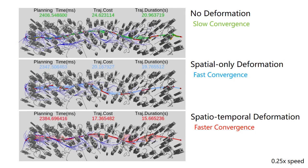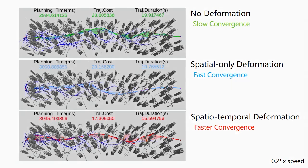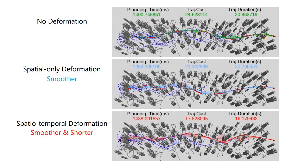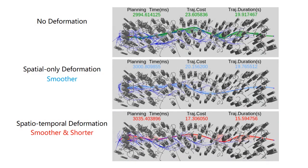The play speed is four times slower. Let's watch it again in normal speed. Given a three-second time budget, planning with spatiotemporal deformation generates a solution with much lower cost and much shorter trajectory duration. The spatial-only deforming smoothens the trajectory but cannot improve time.